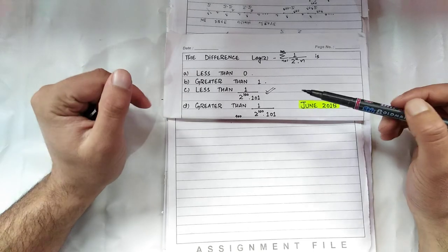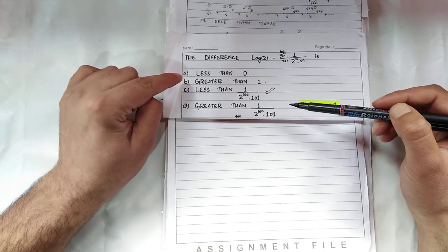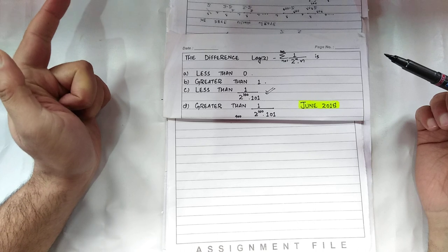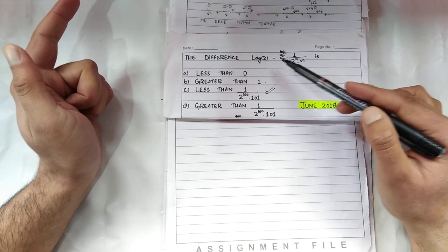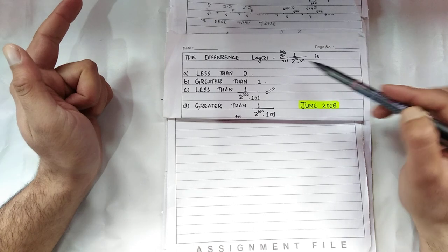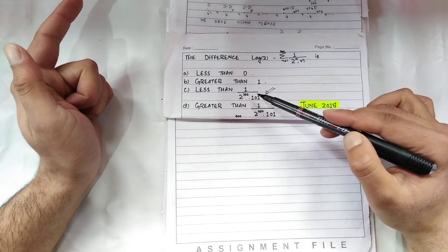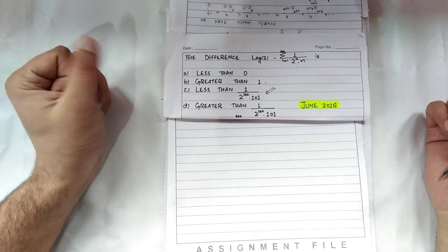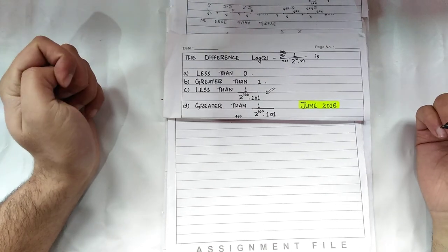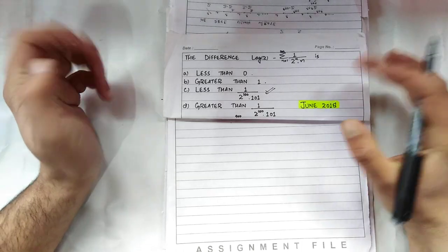Option number first says that it is less than zero, that means the value of this is negative. On finding the difference, this comes out to be a negative number. It's greater than 1, it is less than this and greater than this. So we will check it. It's an easy question asked in the real analysis portion, so we will try to solve it.